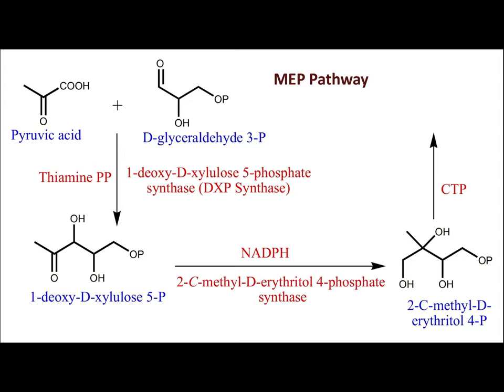Pyruvic acid comes from glycolysis or photosynthesis — this is not entirely clear. Pyruvic acid first reacts with thiamine pyrophosphate and attaches to it, then D-glyceraldehyde 3-phosphate reacts with that intermediate in the presence of the enzyme 1-deoxy-D-xylulose 5-phosphate synthase (DXP synthase). In this way, DXP is synthesized and thiamine is regained in the reaction.